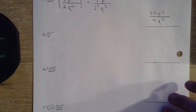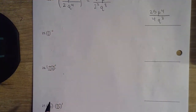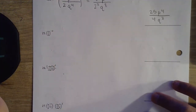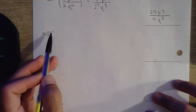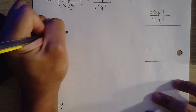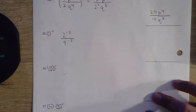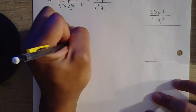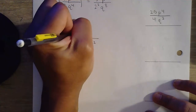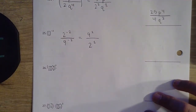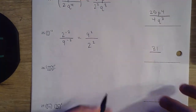Question number 25. We have a negative exponent — we distribute that negative to each of those. So 2 to the negative 2nd, all over 9 to the negative 2nd. Negative exponents — we get rid of those. Move that 2 squared to the bottom, move the 9 squared up. 9 squared is just 81, 2 squared is just 4. Final answer: 81 over 4.